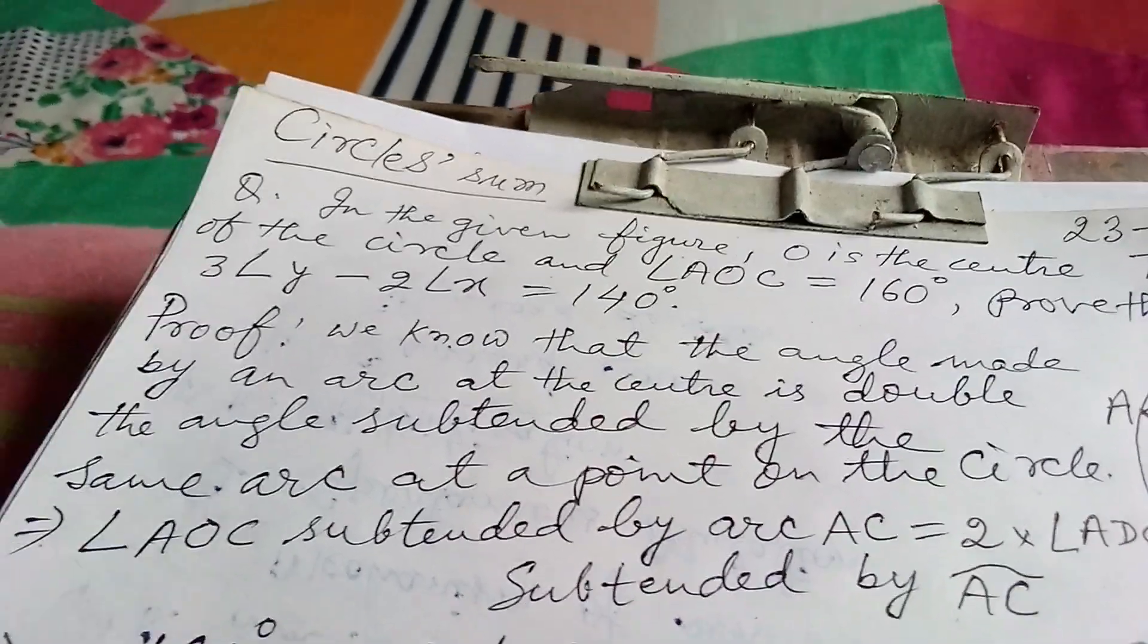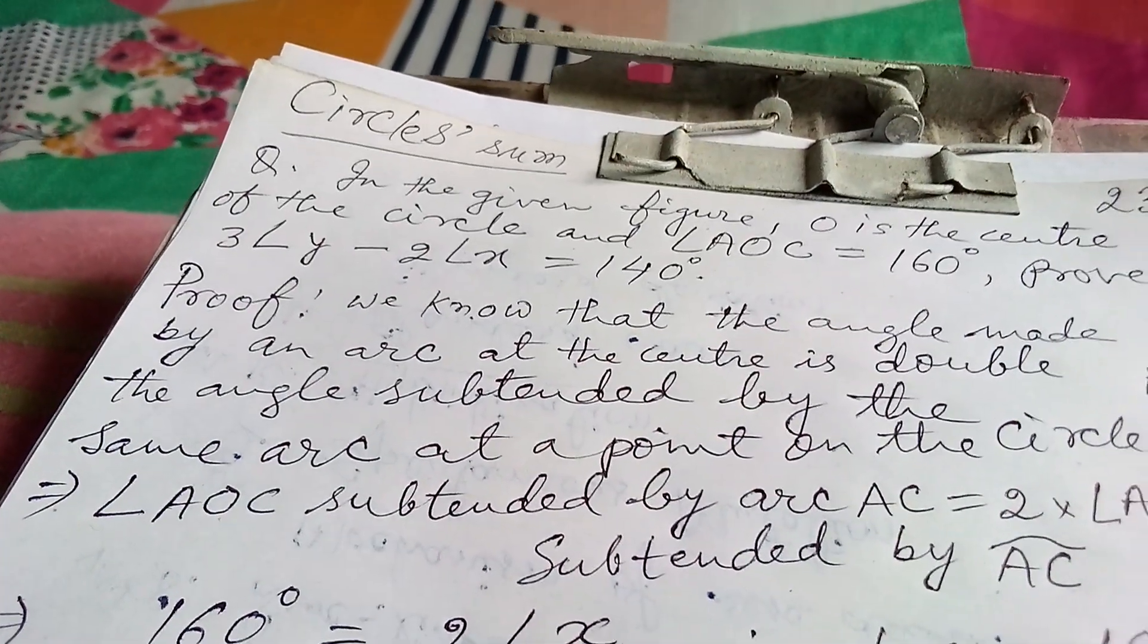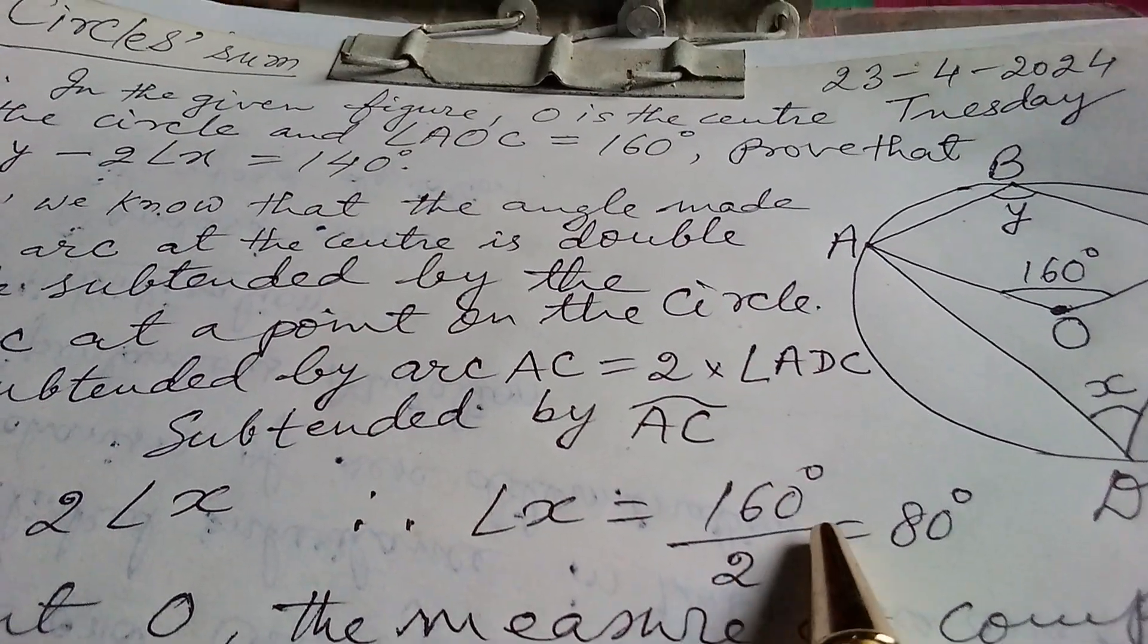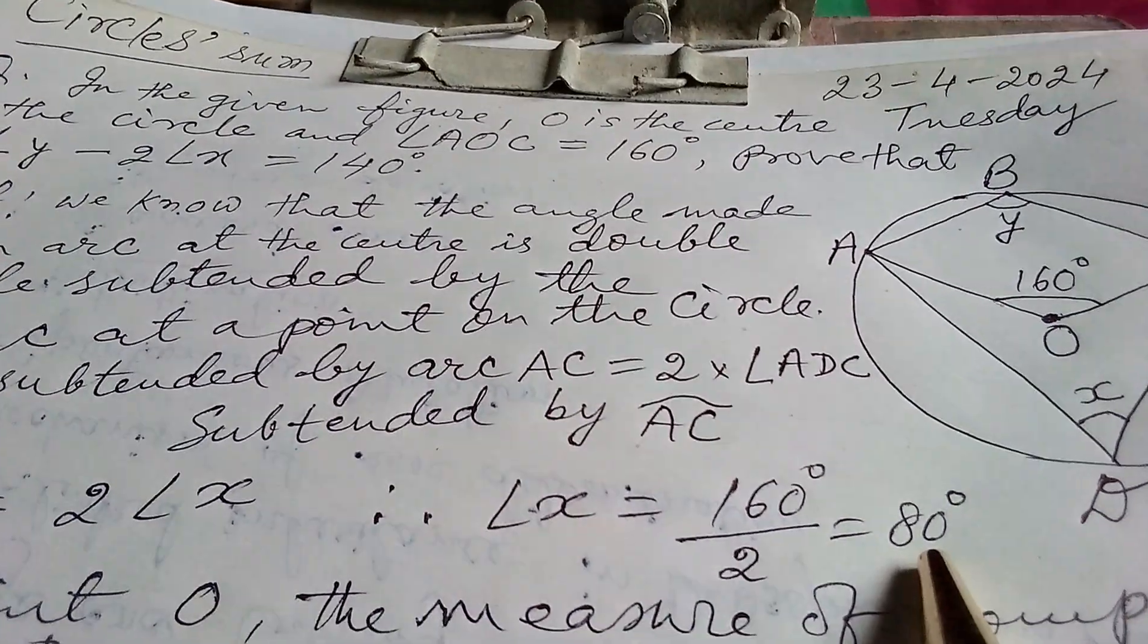this implies angle AOC subtended by arc AC is equals to twice angle ADC subtended by arc AC. That implies 160 degrees equals to twice angle X and therefore, angle X equals to 160 degrees by 2, that is 80 degrees.